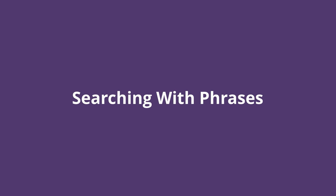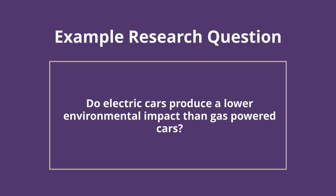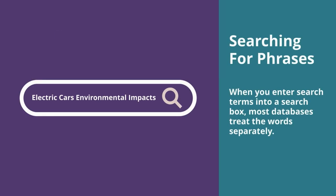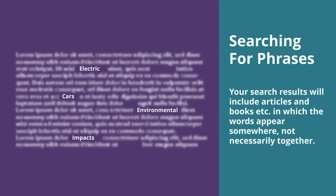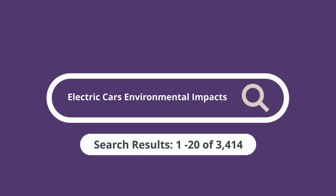You can use phrase searching to make sure the words you're searching for are found together. To understand how this works, let's use the following research question as a basis. When you enter search terms into a search box, most databases treat the words separately. Your search results will include articles and books, etc., in which the words appear somewhere, not necessarily together. You end up with a large number of search results, many of which may be irrelevant to your search.